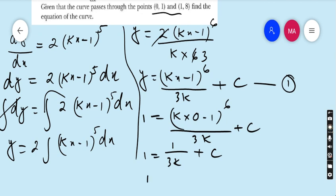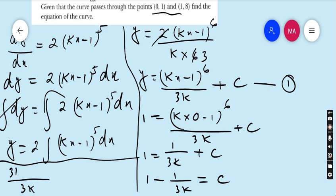K times 0 is 0, 0 minus 1 is minus 1. Minus 1 to the power 6 is 1 upon 3k plus c. Moving 1 upon 3k to the other side: 1 minus 1 upon 3k equals c. Taking the LCM of 3k, we get (3k - 1) upon 3k equals c. This is equation number 2.